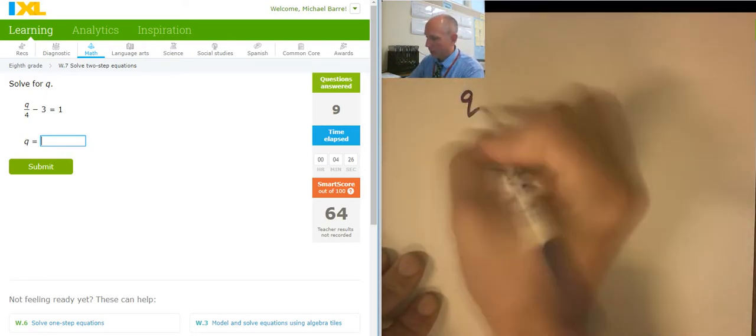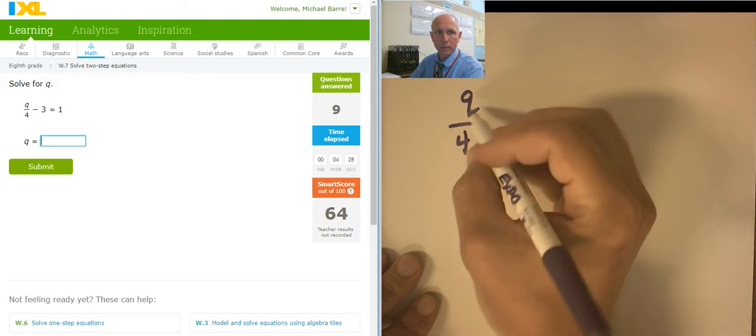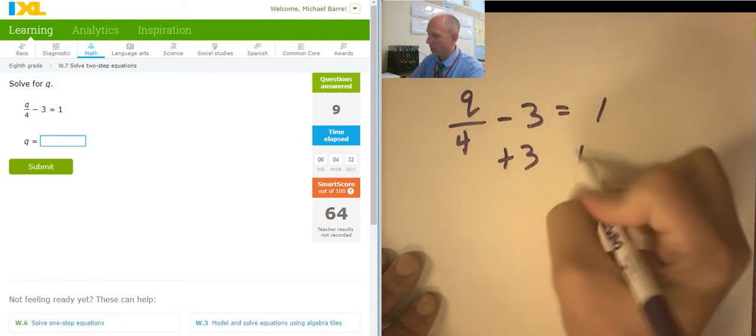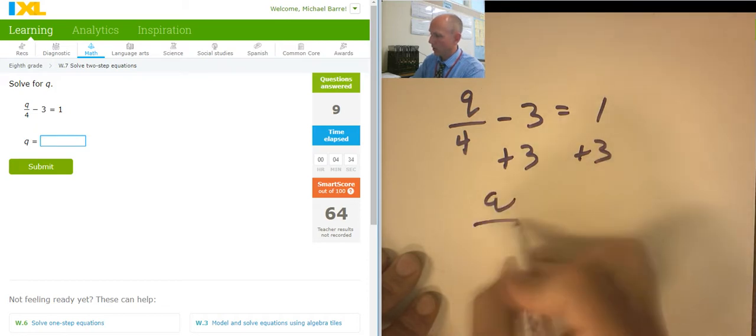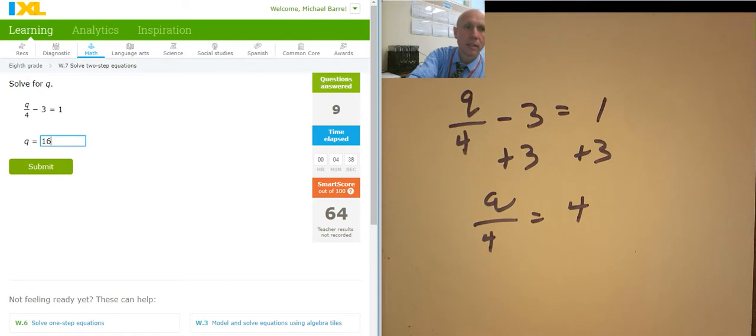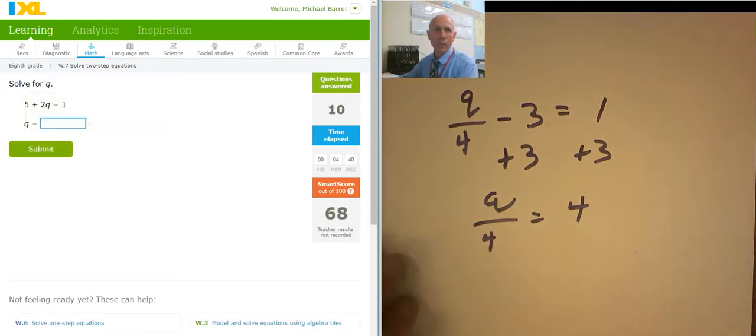So q over 4 minus 3 equals 1. Adding 3 to both sides. q over 4 equals 4. Hitting both sides with a 4 takes me to a 16. That's good.